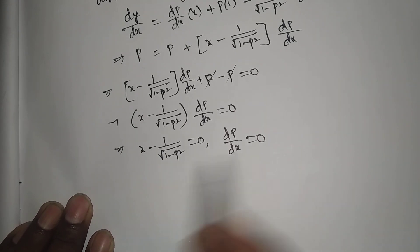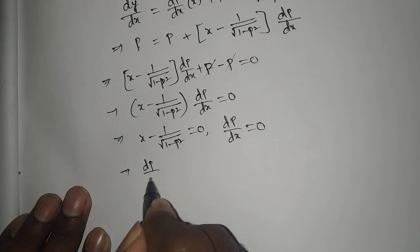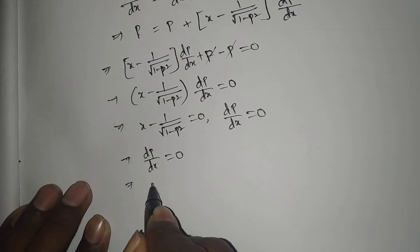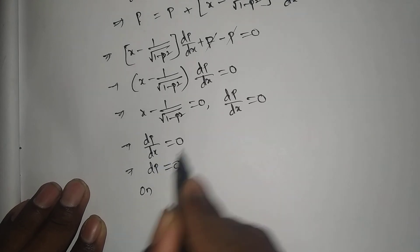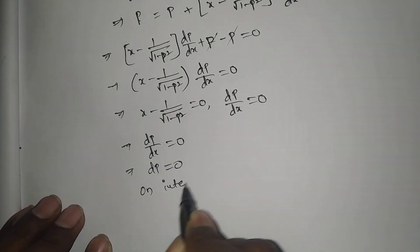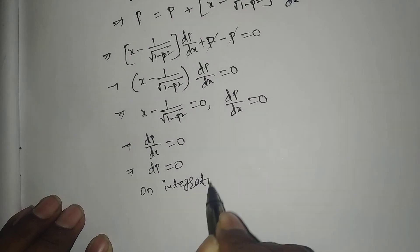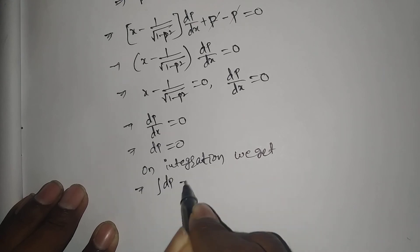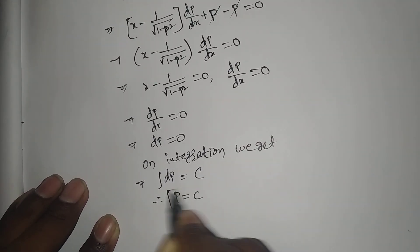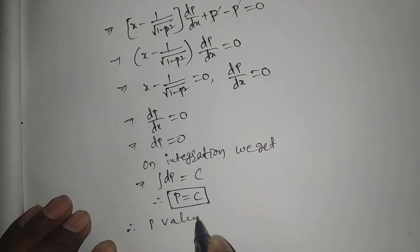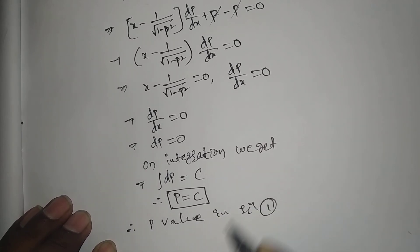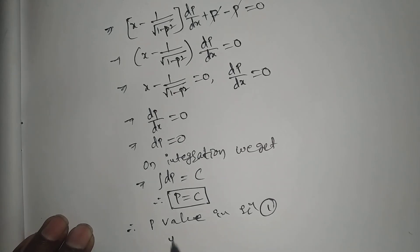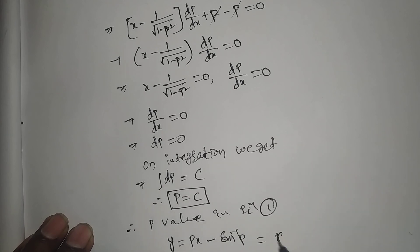This gives us two cases. When dp/dx = 0, substituting back into Equation 1 gives the general solution. The term x minus 1 over root of (1 minus p squared) = 0 yields the singular solution.